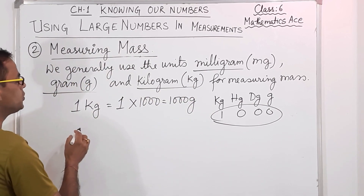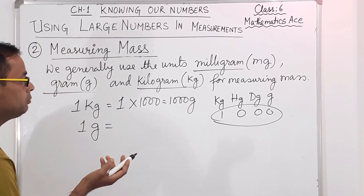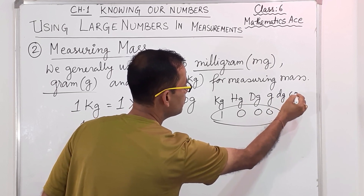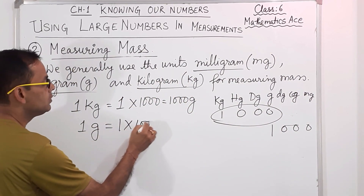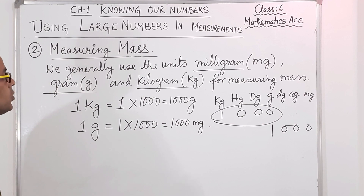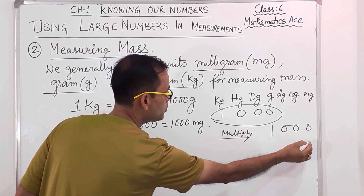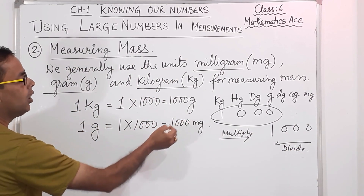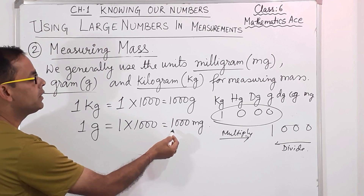If I want to go for 1 gram — 1 gram means how many milligrams? After gram we have decigram, centigram, and then milligram. So 1 into 1,000 — it becomes 1,000 milligrams. So like this we proceed. When we move in the decreasing direction we multiply, and if we move in the other direction we divide. That means 1,000 milligrams divided by 1,000 equals 1 gram — clear.